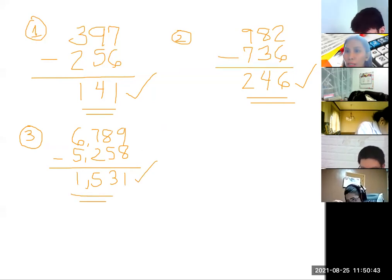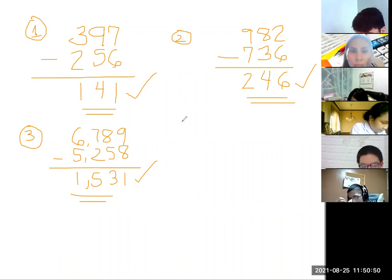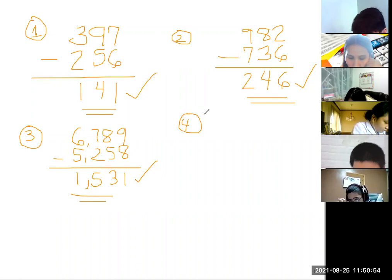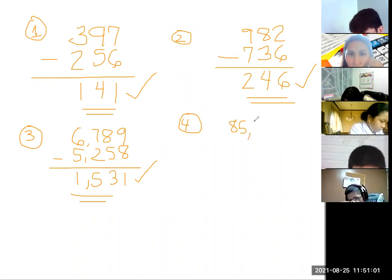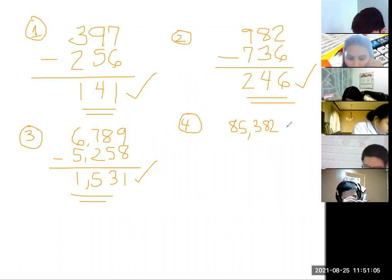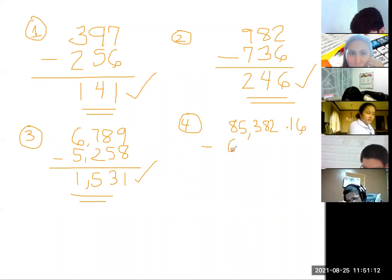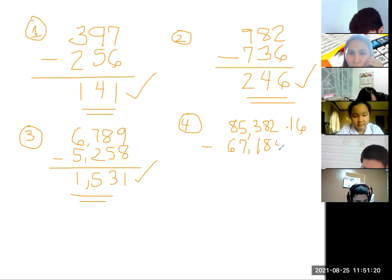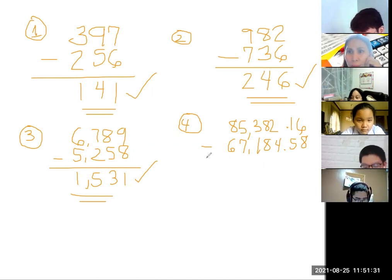For number 3, correct, it's 1,531. Next on number 4, let's write 85,000, 382.67 minus 67,184.58. Yes correct, Miguel, you are correct.